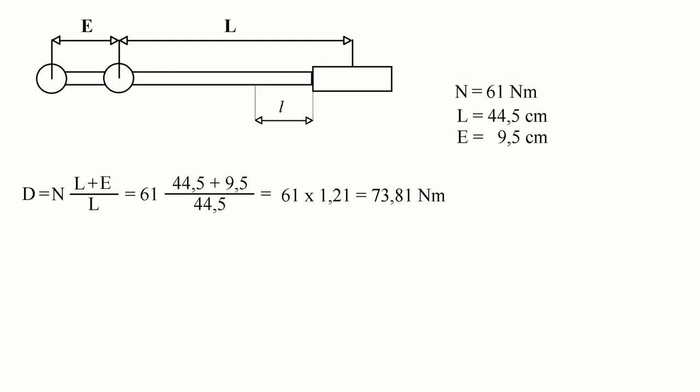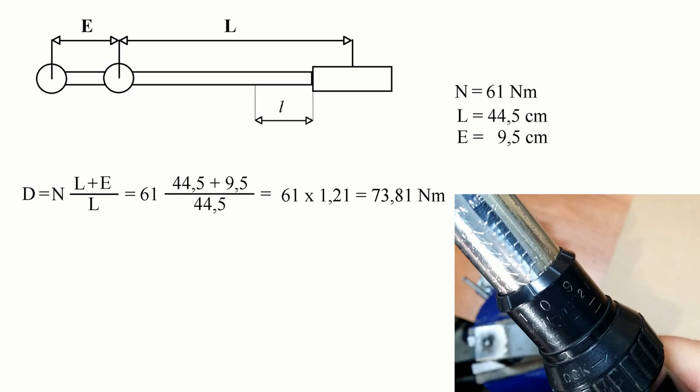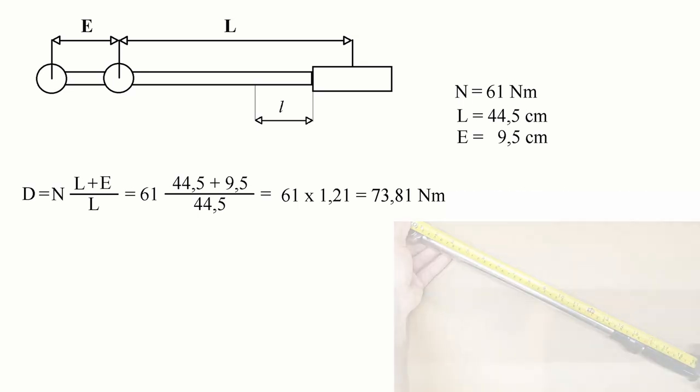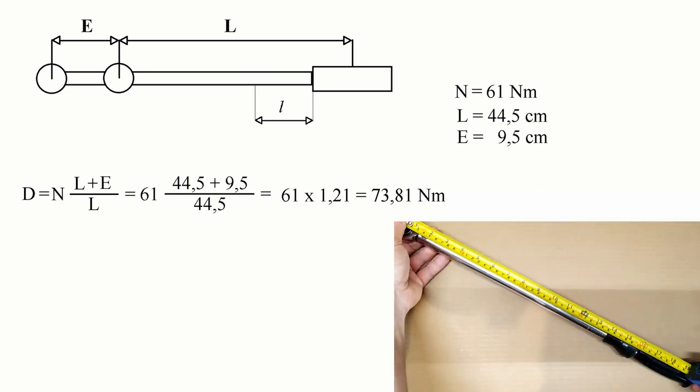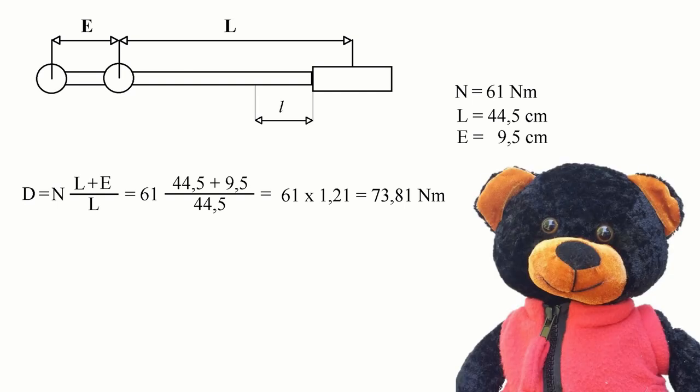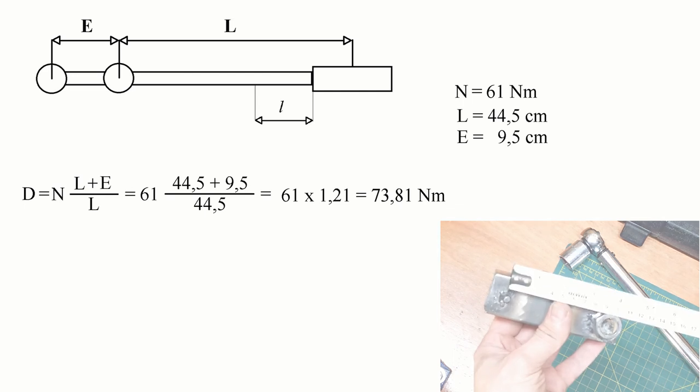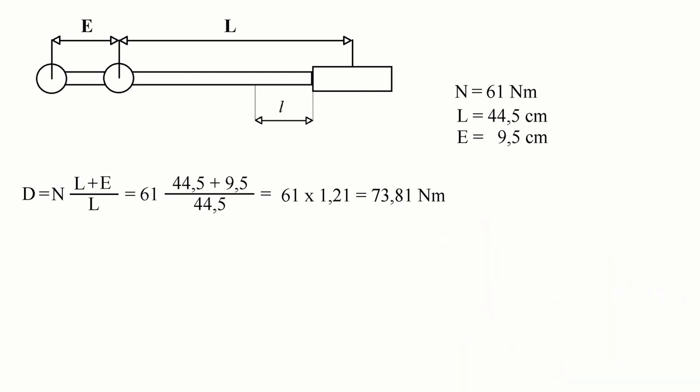In our example the torque wrench was set to 61 N and the length L at this torque setup was 44.5 centimeters. I used the European notation of comma instead of dot but bear with me and the extension 9.5 centimeters. Simple calculations show that the torque delivered to the nut should be 73.81 newton meters.